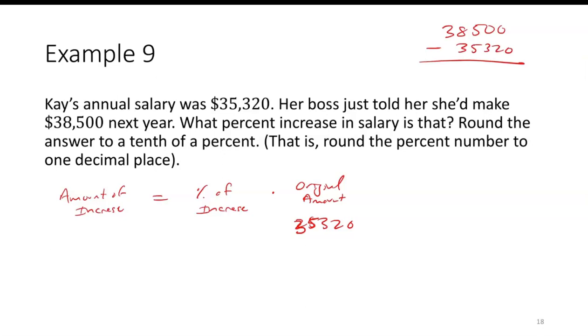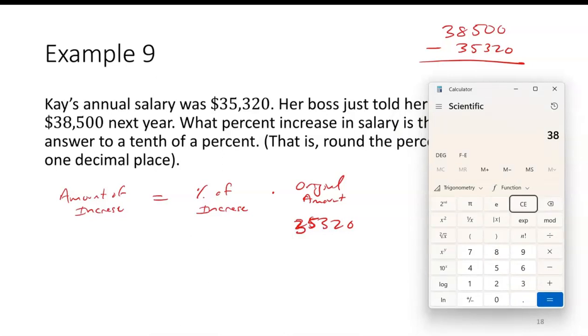So I'll just put that in the calculator. $38,500 minus $35,320. So it was a $3,180 increase.